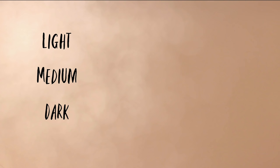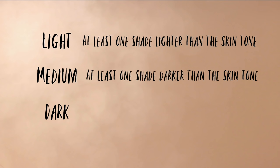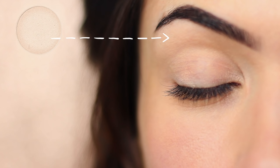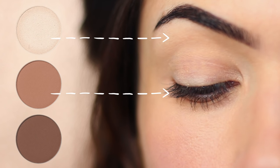For this I use three eyeshadows: a light, a medium, and a dark. You want to customize this to work for you. The light shade should be at least one shade lighter than your skin tone. The medium shade is at least one shade darker than your skin tone. And the dark shade is at least one shade darker than the medium. I'm going to use neutral shadows just to keep it simple, but you can use colors — you just follow the same pattern of light, medium, and dark.